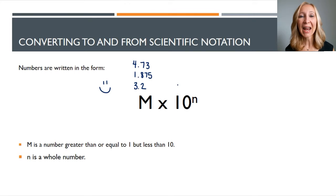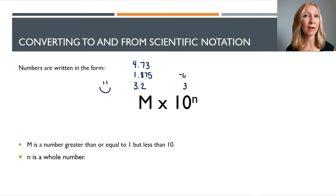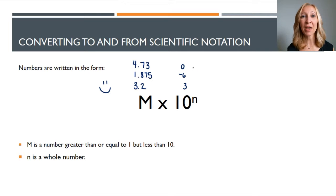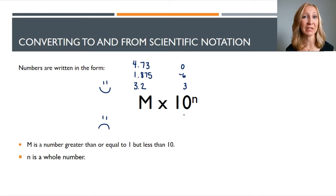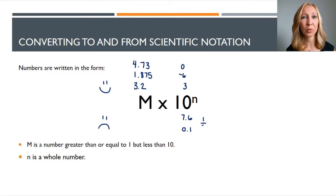The letter n — that exponent on the ten — has to be a whole number to use scientific notation correctly. So you could have ten to the third, ten to the negative sixth, or even ten to the zeroth power. You can't use numbers that are decimals or fractions as your exponent. So seven point six, zero point one, or one half would not work as exponents on the ten.